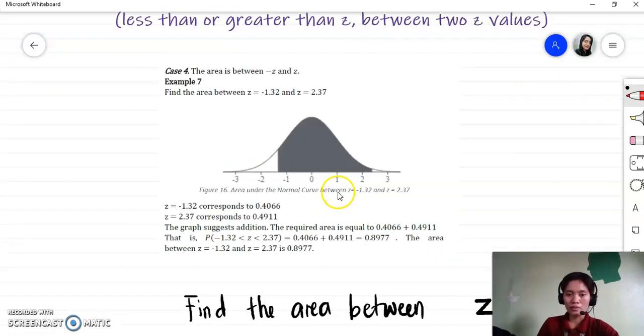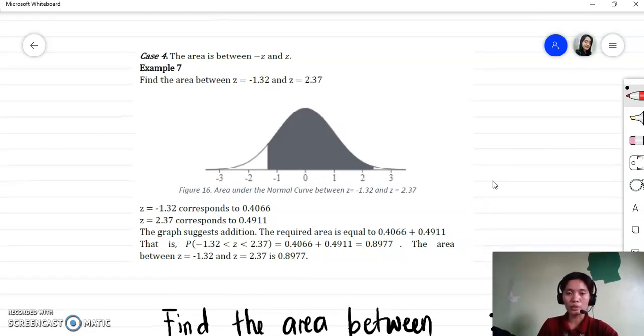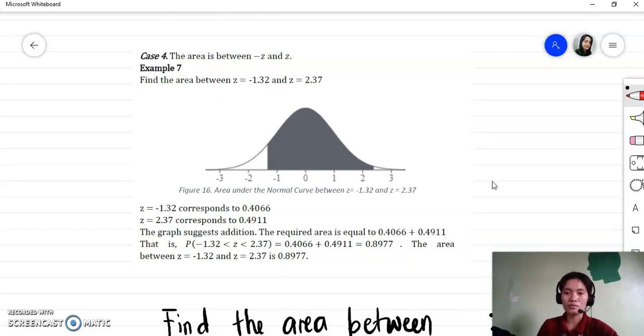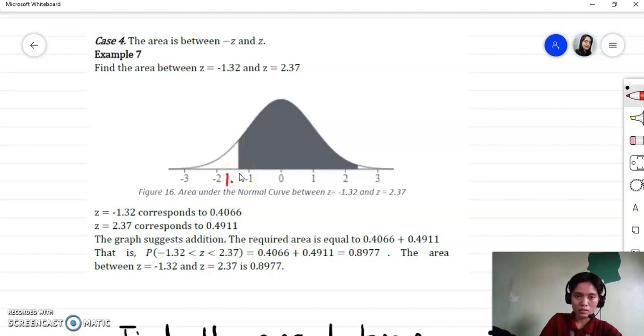We have here an example: the area between Z equals negative 1.32 and Z equals positive 2.37. We already have the figure here. This is negative 1.32 and this is 2.37. The shaded region is the area between these two Z values.